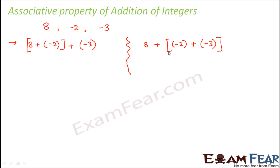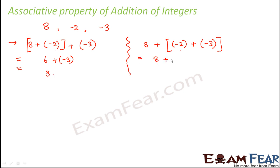In the second case, you first add the second and third integer and then add the sum to the first integer. So: 8 plus minus 2 equals 6, plus minus 3 equals 3. In the other case, 8 plus minus 5 is also equal to 3. Both of these give the same result.